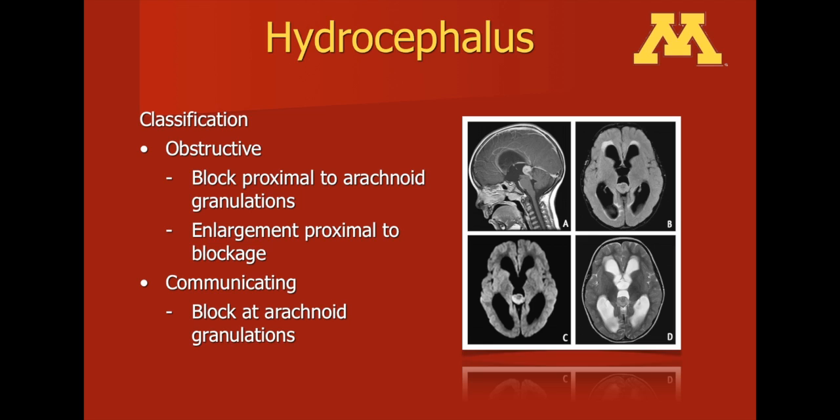Obstructive hydrocephalus is when there is an obstruction within the path of the ventricular system. For instance, and probably most common, there may be an obstruction at the cerebral aqueduct. Pineal tumors have already been mentioned in this context — depicted on the right is a pineal tumor, and as it enlarges it obstructs the cerebral aqueduct and leads to hydrocephalus, as can be seen in this depiction.